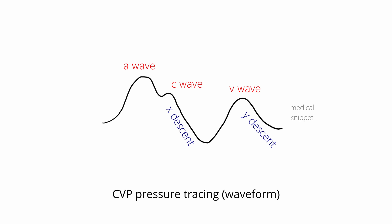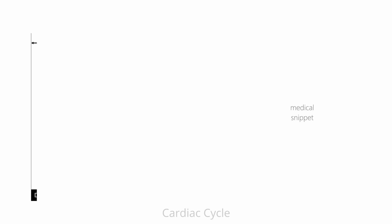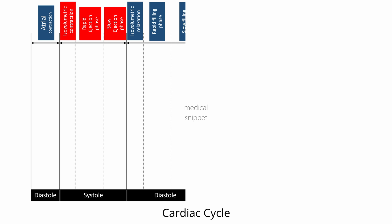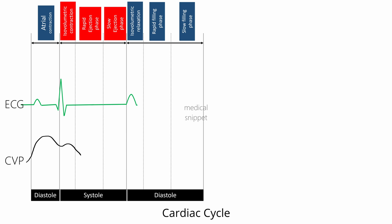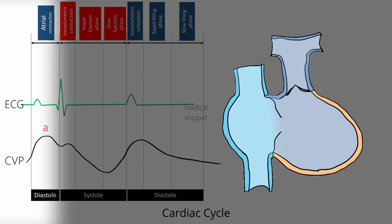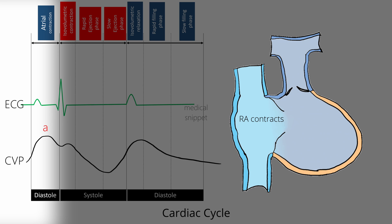Each component corresponds to various phases of the cardiac cycle. The first peak of the central venous pressure tracing is the A wave. It corresponds to right atrial contraction — that is, when the right atrium contracts, the pressure inside increases, which is seen as the A wave in the CVP pressure tracing. Since the A wave occurs due to atrial contraction, it corresponds to the P wave in the ECG.